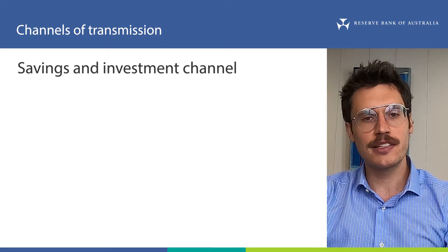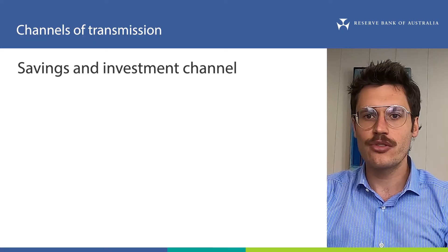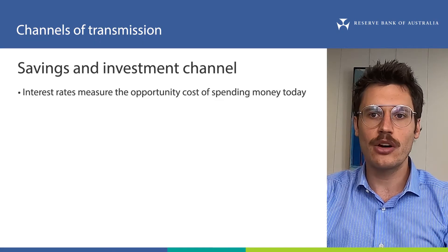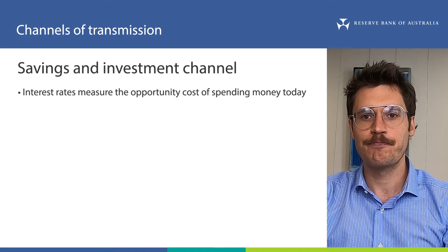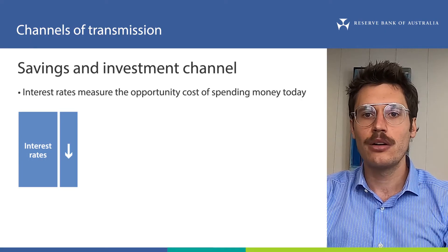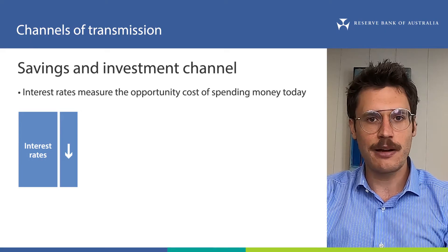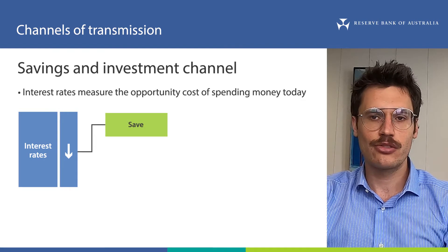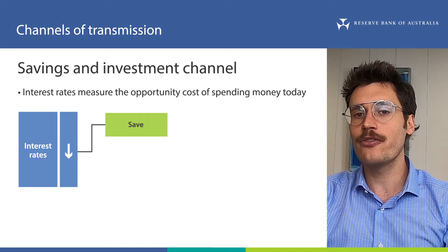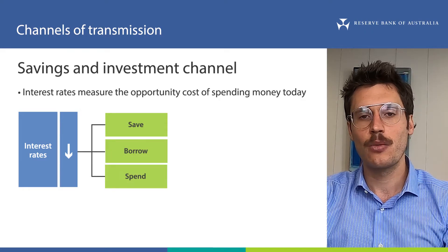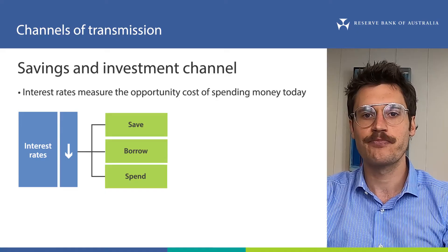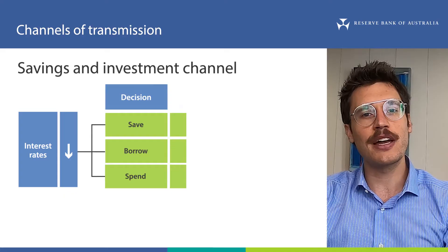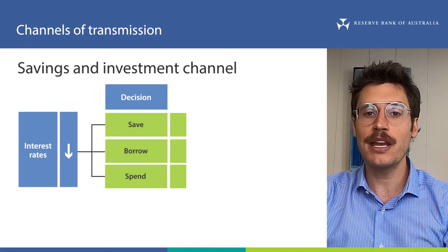First up is the savings and investment channel. In our introductory video on interest rates we discussed how interest rates measure the opportunity cost of spending our money today. If interest rates are lower, we might be more likely to spend our money today rather than saving it until some point in the future. With lower interest rates it also becomes cheaper for us to borrow money to spend, which we can pay back later with interest. So one way that interest rates affect the economy is by influencing decisions about saving, borrowing and spending money.